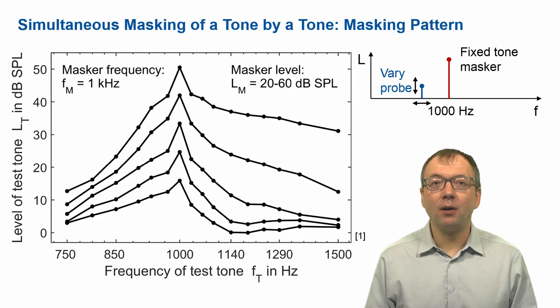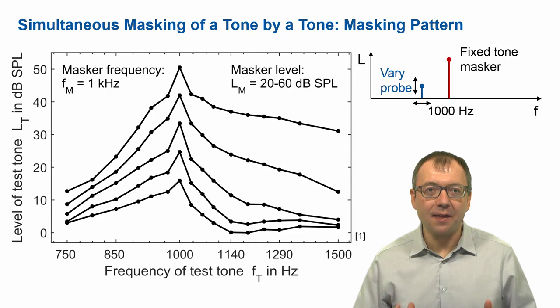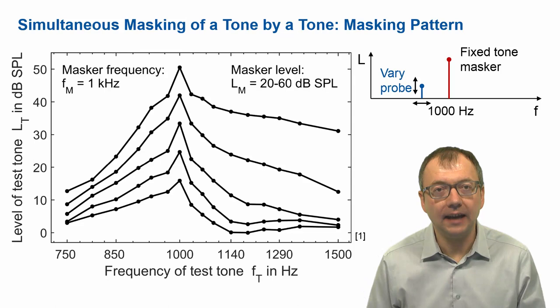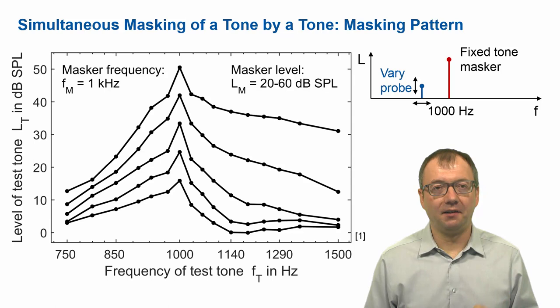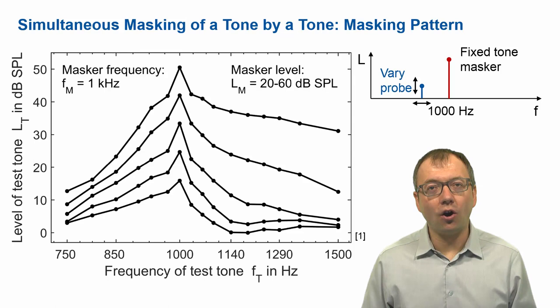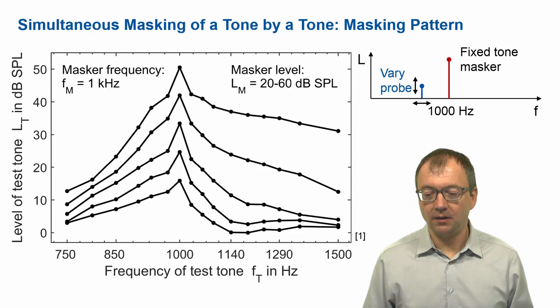In the past lecture we've learned about auditory masking and we heard that a tone can mask another tone. This is depicted again in this figure which you already had in the other lecture. This figure shows the level of a tone necessary as a function of its frequency so that this tone is just audible in the presence of another tone which we call the masker.